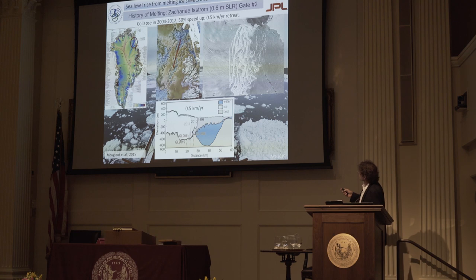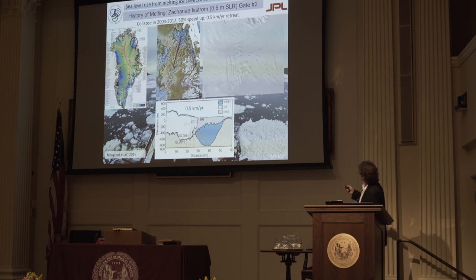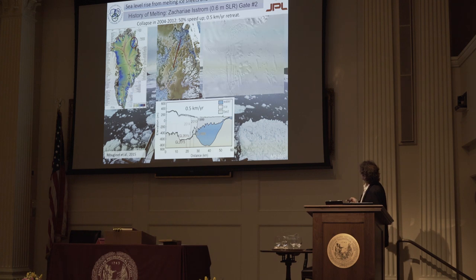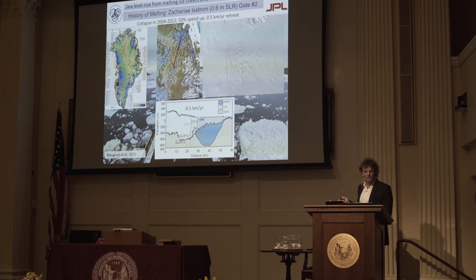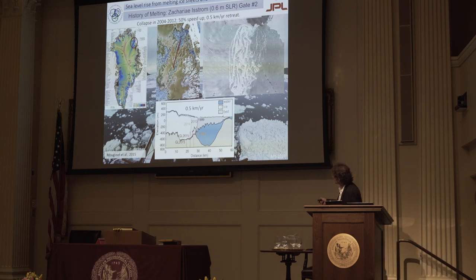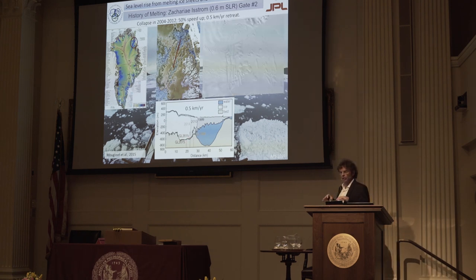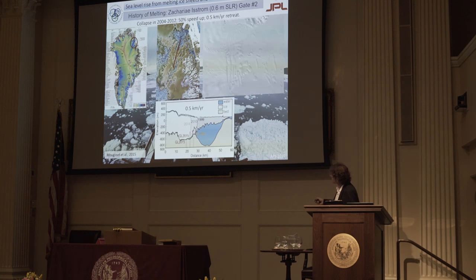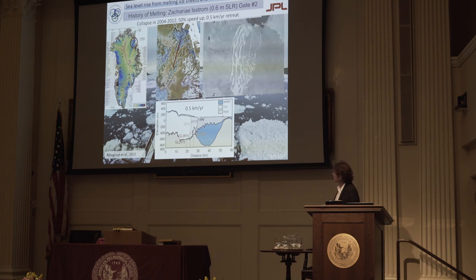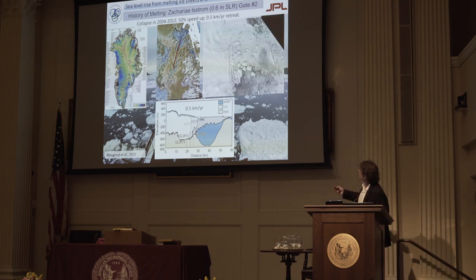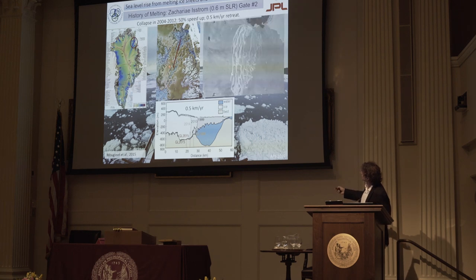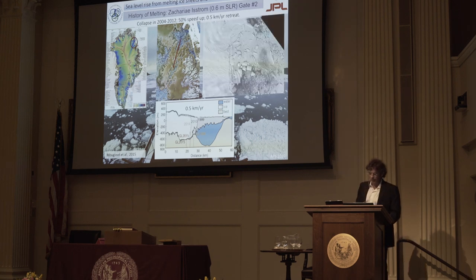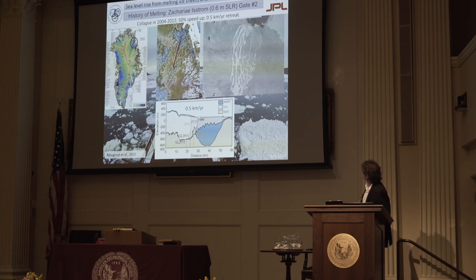In the northeast corner, Zachariae Isstrom lost its ice shelf between 2004 and 2012. It took a little time to speed up — we didn't quite understand that at first. But we discovered that the glacier was anchored on a ridge, and it took a while for the glacier to dislodge from that ridge and start retreating along the retrograde slope. There we have a channel conducive to a marine retreat into the interior of Greenland.